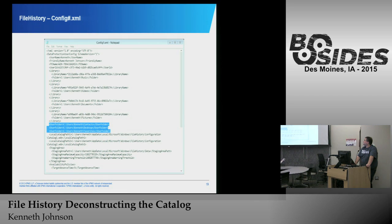This is what the configuration file looks like. It tells you when it's backing up, where it's backing up, and from which directories it's backing up. By default, Windows 10 will back up all the directories that Microsoft creates — your documents, desktop, favorites. It will also back up anything from your OneDrive directory stored locally. That's new in Windows 10. It also tells you where it's going to back up to.